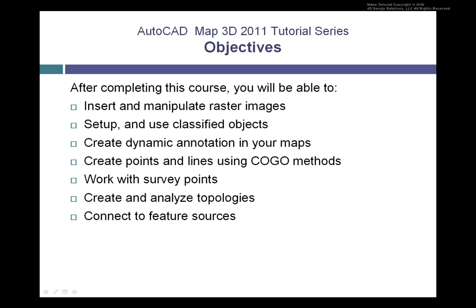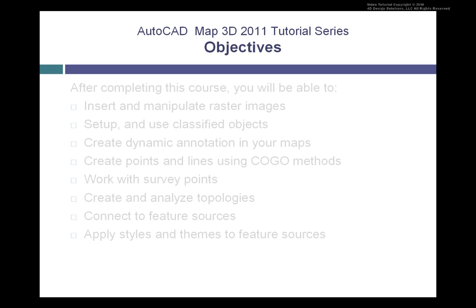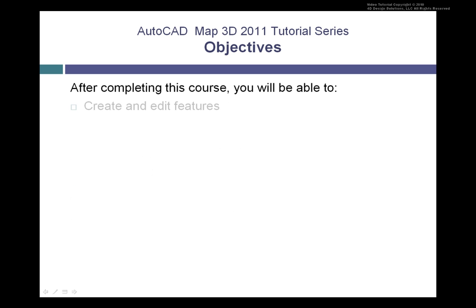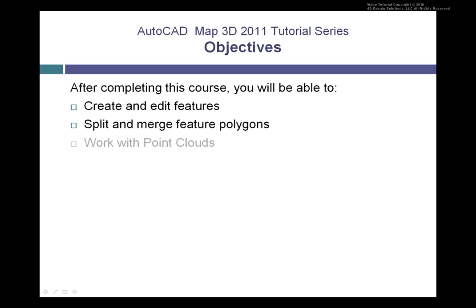You'll learn to connect to feature sources using FDO technology, and apply styles and themes to those feature sources once connected. You'll also create and edit features within those feature sources, learn to split and merge polygon features, and work with point clouds — which are very large data sets typically collected from LiDAR data within geospatial applications. You'll also establish and plot map books.